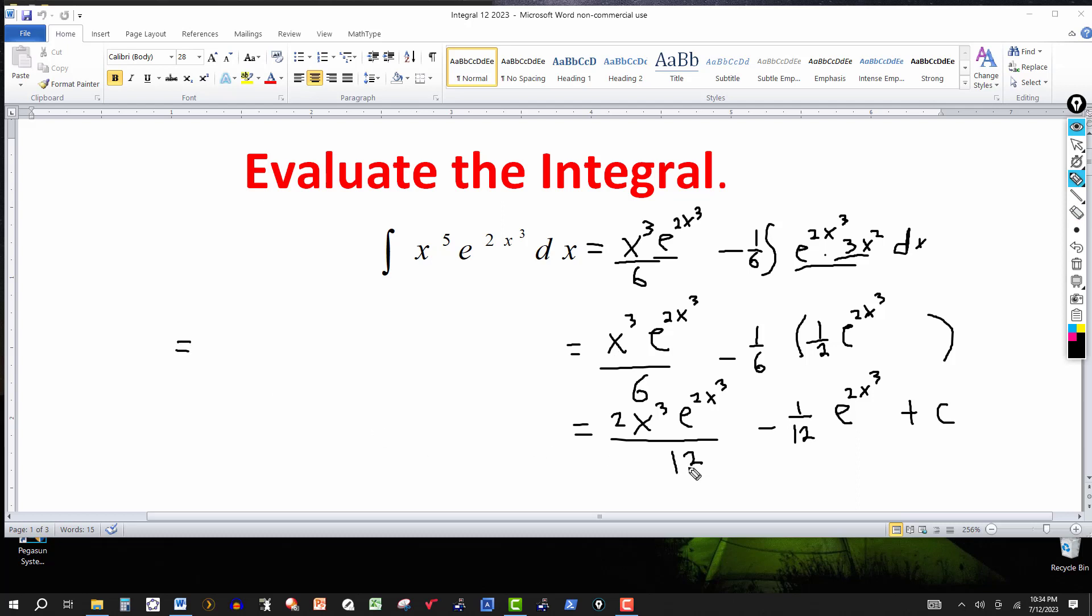Got a 12 here, got a 12 here, minus 1/12. I'll factor out a 1/12 there. And also an e to the 2x cubed. So factoring out 1/12, e to the 2x cubed.